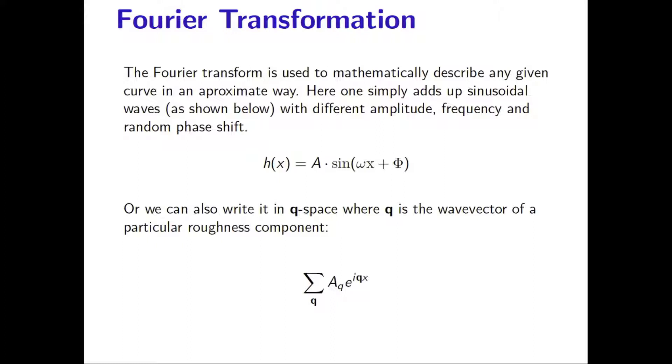The Fourier transformation is used in numerous applications to model and analyze complicated curves by adding up sinusoidal waves with different amplitude A, frequency F and a random phase shift phi. Here we show the equation for a single sinus signal describing only roughness on a single length scale.